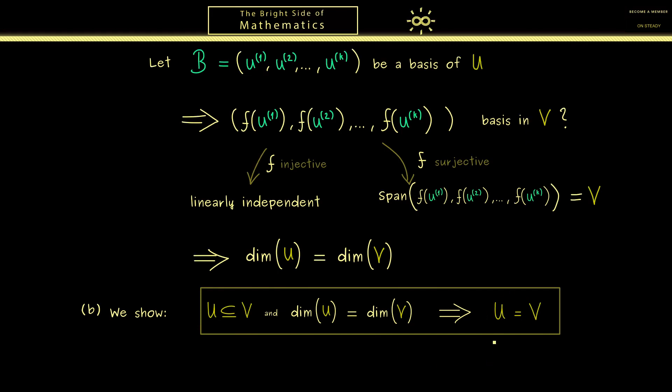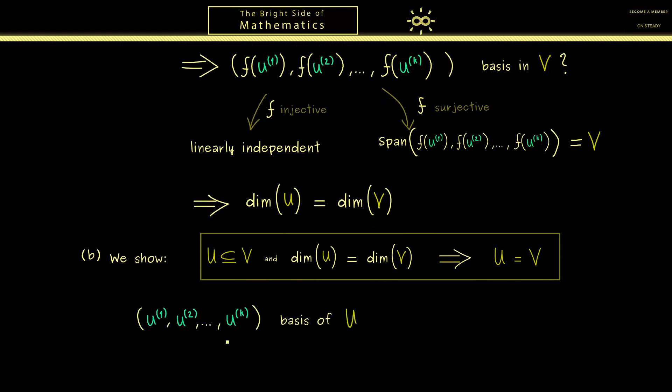More precisely this means when we start with a basis out of k vectors for U, we also get a basis for V. This follows immediately because we have the subset relations so the vectors U are also elements in V. Here please note we already know the dimension of V and we have a linearly independent set here. In other words it is a basis for V as well.